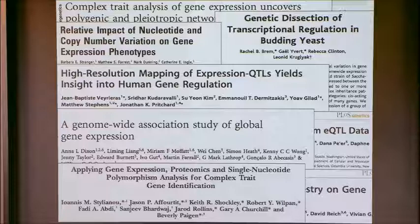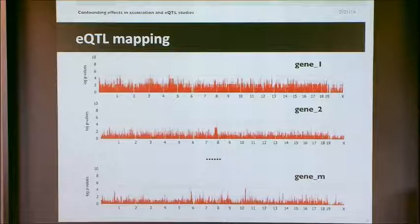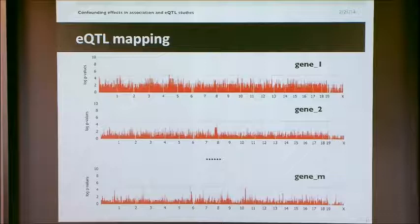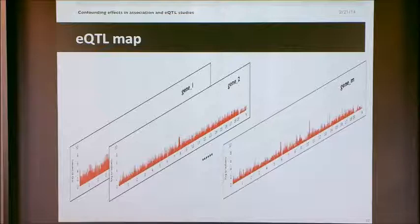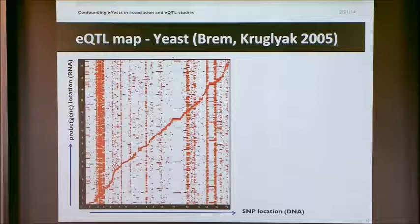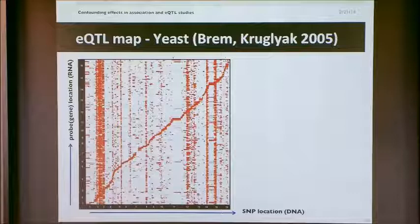The most basic thing you can do is take the expression level of M genes and just do a genome-wide association study for each one. It's difficult to visualize 20,000 Manhattan plots, so what we do is rotate them vertically and stack them, looking down on them. On the x-axis are the SNP locations, on the y-axis are the probe locations, and the intensity of a point — if it's above some threshold — is the measure of association between the SNP and the probe.